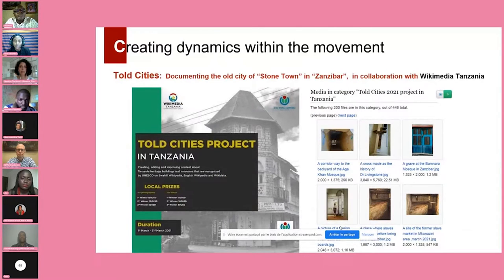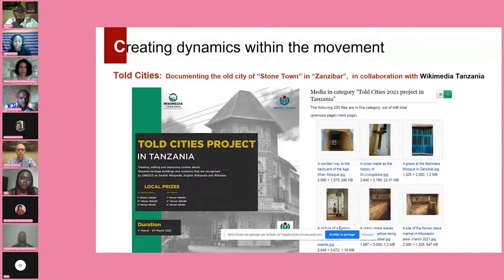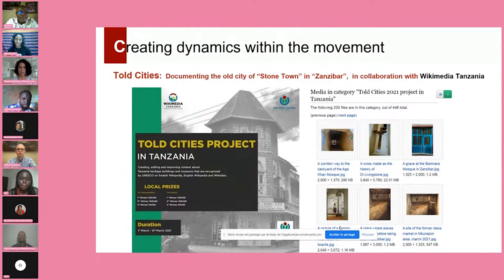Another example for creating dynamics within the movement is the thematic project of Tall Cities. World Heritage can be partitioned into many groups — buildings, cities, archaeological sites. We are creating thematic projects that work on World Heritage sites of the same nature but belonging to different countries. Tall Cities targets cities, urban quarters, and towns listed by UNESCO as World Heritage. One very successful collaboration was with Wikimedia Tanzania, and I will let my friend Antony talk about this collaboration and its outcomes.